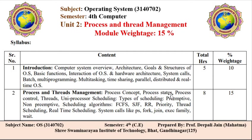The first part is Process, which is part 1 of unit 2. The second part is Threads, which has many sub-topics and is also important for the GTU exam — I will cover all sub-topics of thread. The third part is CPU Scheduling, which includes types of scheduling, primitive and non-primitive scheduling algorithms.